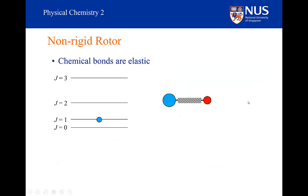Ultimately, this is because chemical bonds are elastic, they are not rigid. If J equals 1, the bond length will be this length, and my molecule will rotate like so.